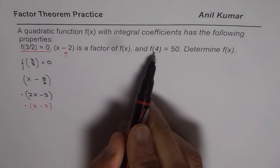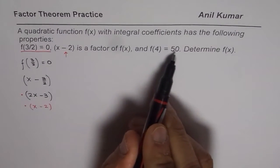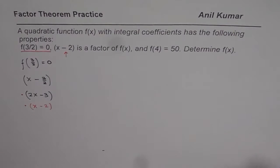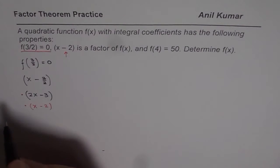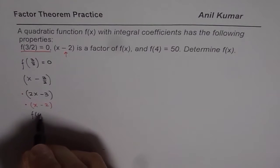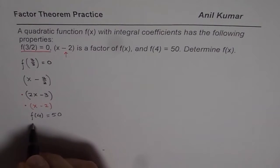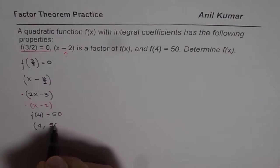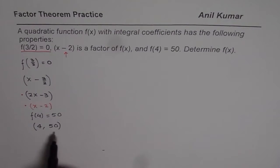Then we have a point here which is f(4) equals 50. Now, what does that mean? f(4) equals 50 means that there is a point whose x value is 4 and y value is 50. So with the help of this point, we can find the quadratic function. So that is the information given to us.